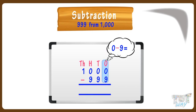We can't subtract 9 from 0, so borrow 1 from the digit at the next higher place — that is, tens place. But tens place is also 0, so move to the next higher place, that is hundreds place. But hundreds place is also 0. So, move to thousands place. Here we have 1. Borrow this 1 for hundreds place. Cross 1, make it 0, and give 1 borrow to 0 at hundreds place. Now we have 10 at hundreds place.